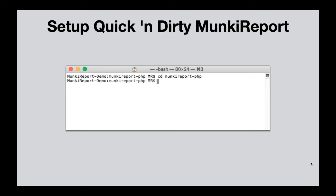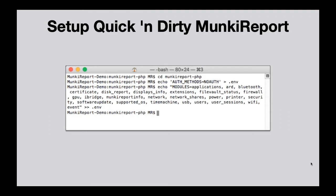We'll assume you've already downloaded Monkey Report from GitHub and extracted the zip archive to your desktop. We'll change directory into the Monkey Report folder and echo out the no-authentication method into your environment file. Note: no-auth is really bad — anyone who knows the URL of your Monkey Report can see all your information. This should only be used for demos and development instances.